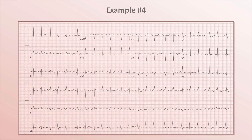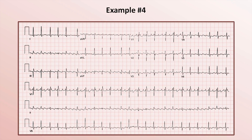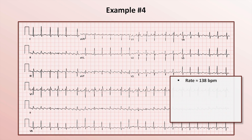Example 4. Using the 10-second rule with 23 QRS complexes across the EKG, the rate is 23 × 6, or 138.